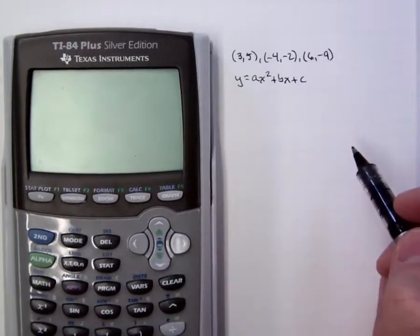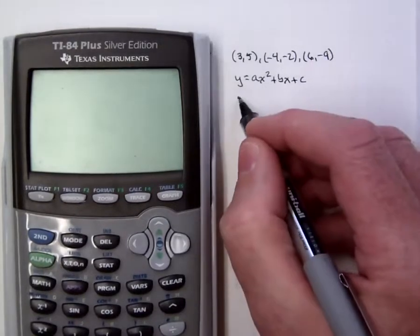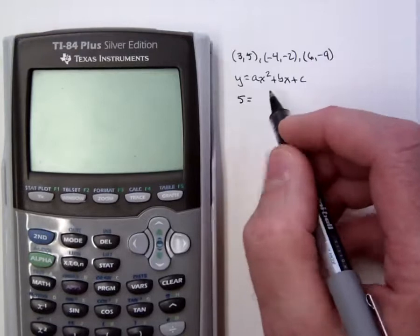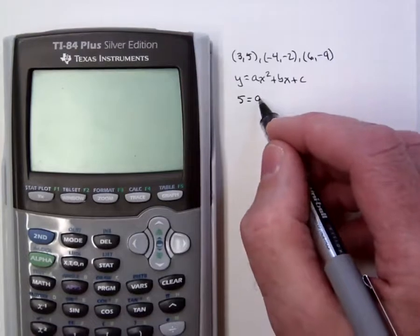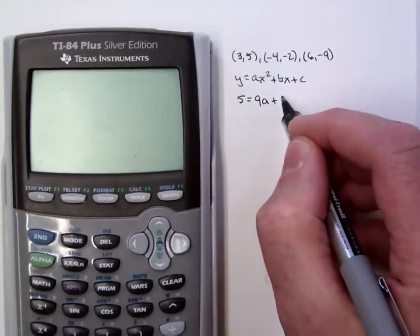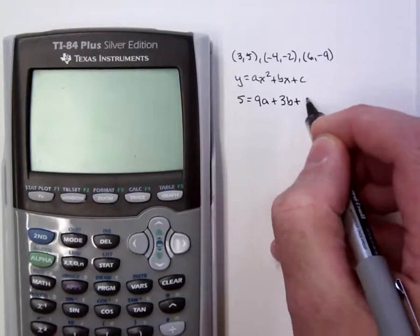So in my first ordered pair, x is 3 and y is 5. So I'll have 5 equal to a times 3 squared plus b times 3 plus c.